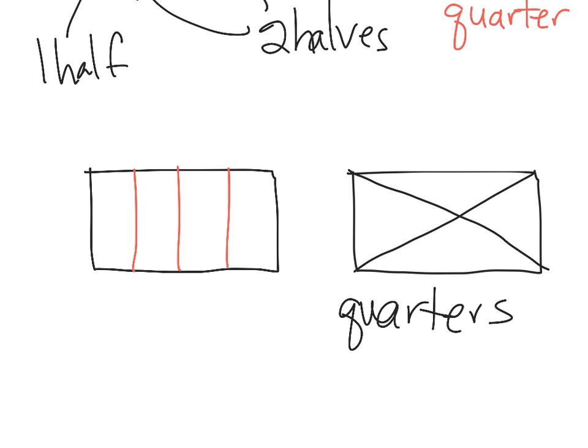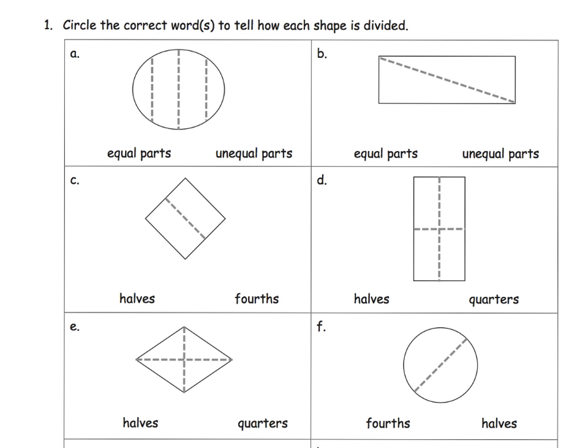They don't look the same, but they are indeed the same size. I shouldn't say same size. They take up the same amount of space, even though they look different. One triangle looks very different from the other. They take up the exact same amount of area. So we are going to say that those are equal quarters, even though they might not look like it.